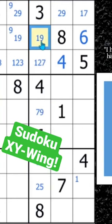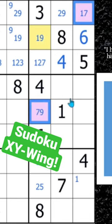Look right here. This is your pivot, right? This is a 1, 9, and it has two pinchers, okay?